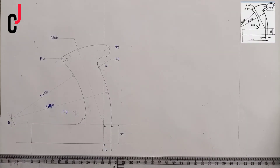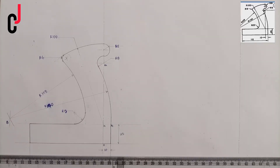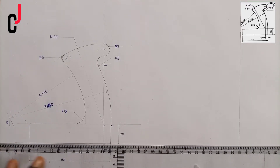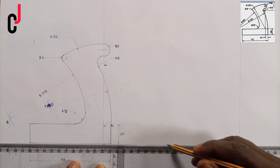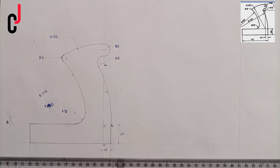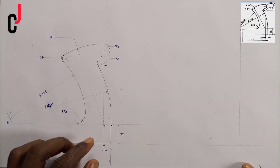Hello guys, today we'll be discussing how to construct a jack plane handle using the principle of urgency. The first thing we do is draw a vertical line, which we've done here, and then we choose a point of our choice. I'll draw a horizontal line as construction lines, and I'll call this point here point zero.